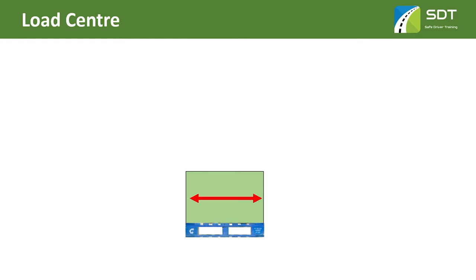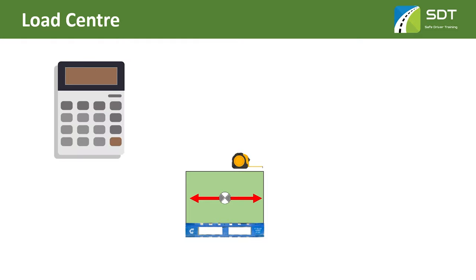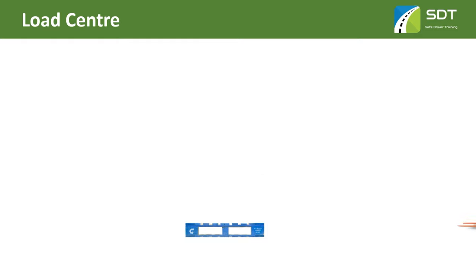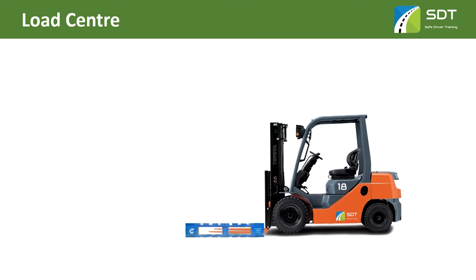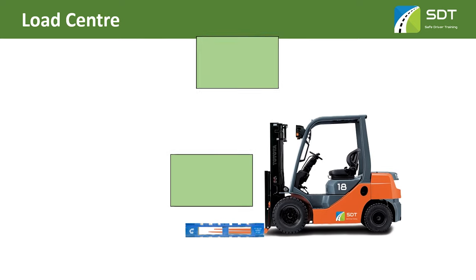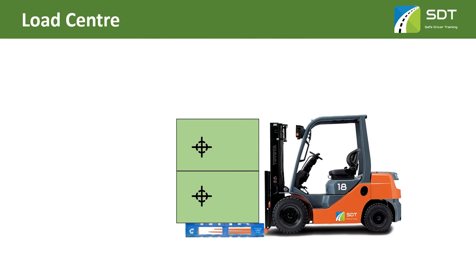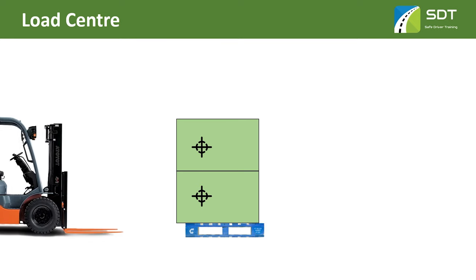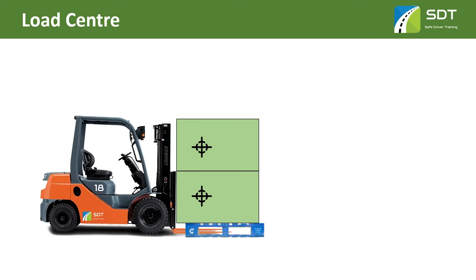If the load is equally balanced on the pallet, we can find the center of gravity by simply measuring the load and dividing it by two. If the load is not evenly distributed — for example, it's heavy on one side — there may be a marking on the load showing the center of gravity, so you can adjust its position on the forks. You should always position the heaviest parts of the load as close as possible to the face of the forks or the backrest.